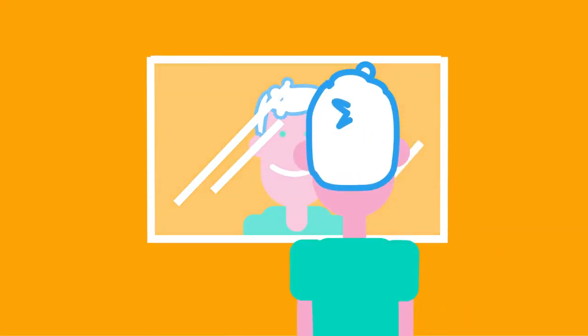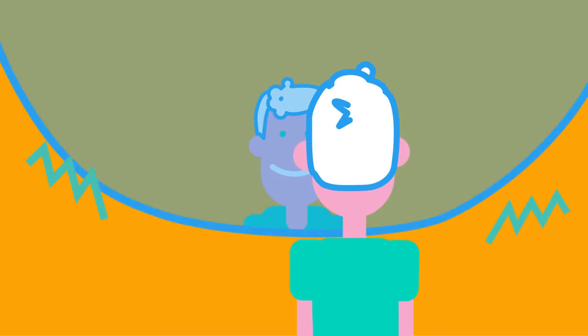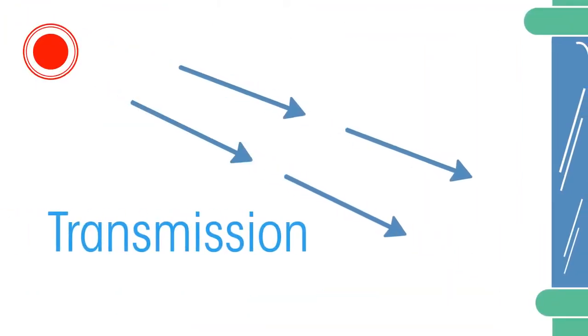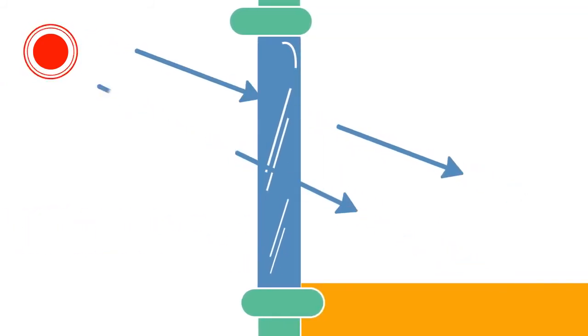Transmission is when waves keep traveling in the same direction through an object, like light through a window.